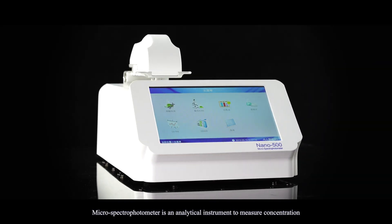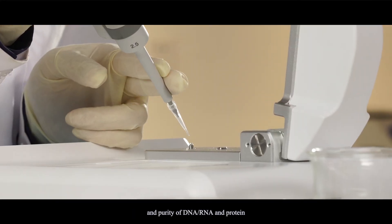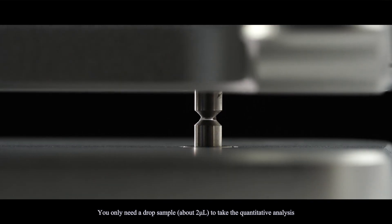A microspectrophotometer is an analytical instrument to measure concentration and purity of DNA, RNA, and protein. You only need a drop sample about 2 microliters to take the quantitative analysis.